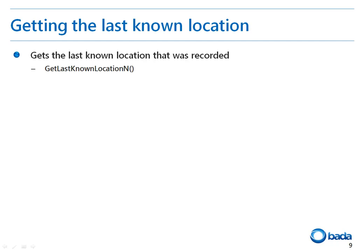Now I will explain the location information on request. The location information can be retrieved by an application request instead of periodic updates. Since it returns the last recorded location, you must check the timestamp and other fields to determine if this information is recent enough for the application to use without creating a new request for obtaining the current location. The GetLastKnownLocation method has two overloaded variations: one gets the last known recorded location regardless of the location method, and the other gets the last known location recorded using the specified location method.